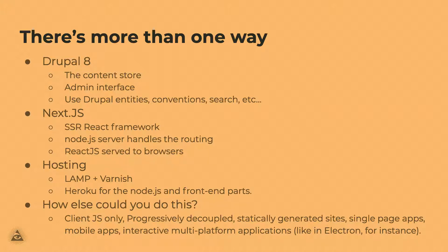To ground the examples and modules I'll talk about, I'm going to assume we're building a full decoupled site using Drupal and a framework called Next.js. We'll continue using Drupal as our content store — it holds our text, files, organization of content like menus, path names, and it's our admin interface. We want to continue using Drupal entities, Drupal conventions, modules, search, permissions, databases, indices, and caching.